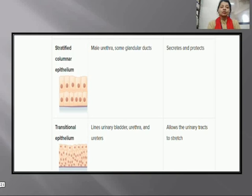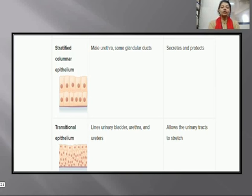Transitional epithelium is mainly present in the urinary bladder, urethra, and ureters. It allows the urinary tract to stretch and relax — there are two types: a relaxed form and an extended form — helping in the stretching and relaxation of the urinary tract.